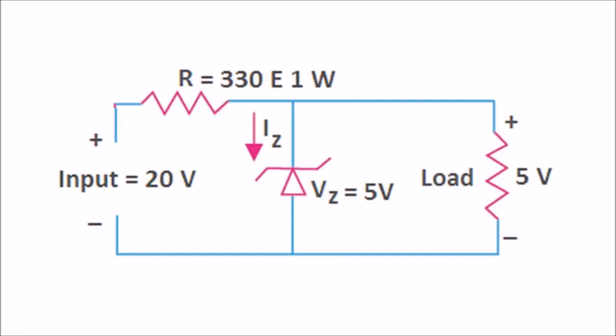The Zener diode provides a path for the current to flow and hence the load gets protected from the excessive current. Thus, the Zener diode serves two purposes: as a voltage regulator as well as protecting the load from excessive current.